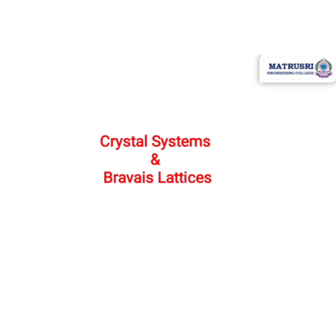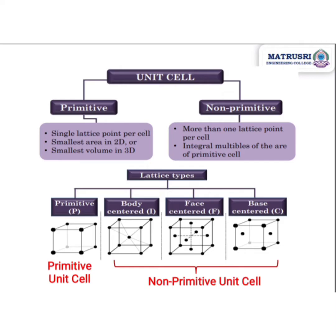Hello everyone. In this video I am going to tell you about different types of crystal systems and Bravais lattices. Before going to discuss about them, let me remind you about unit cell. A unit cell is the smallest cell, and on repeating it in three dimensions we can produce the total crystal structure.